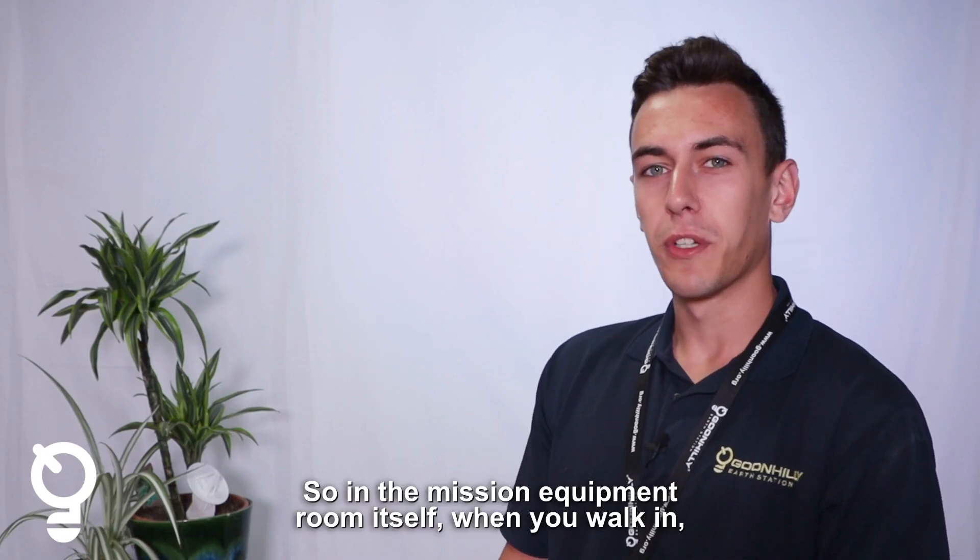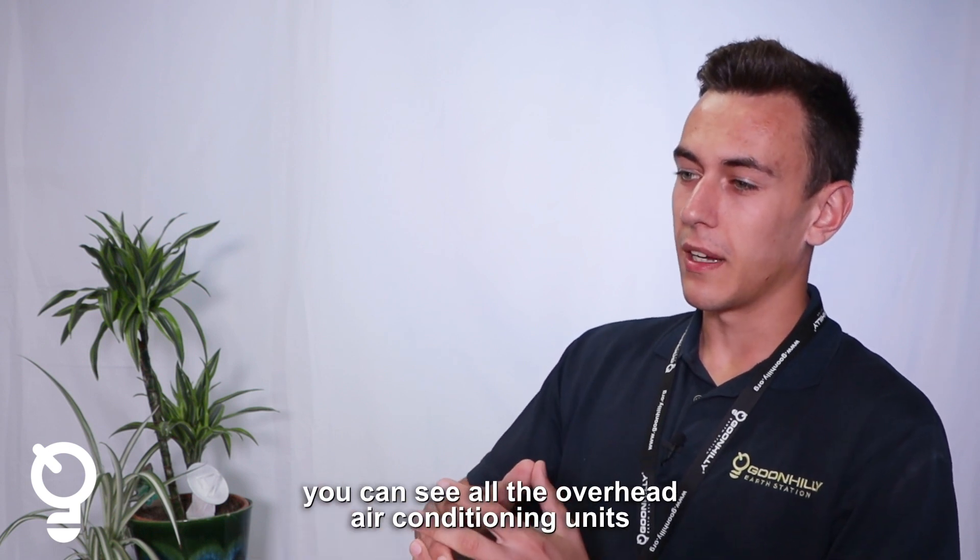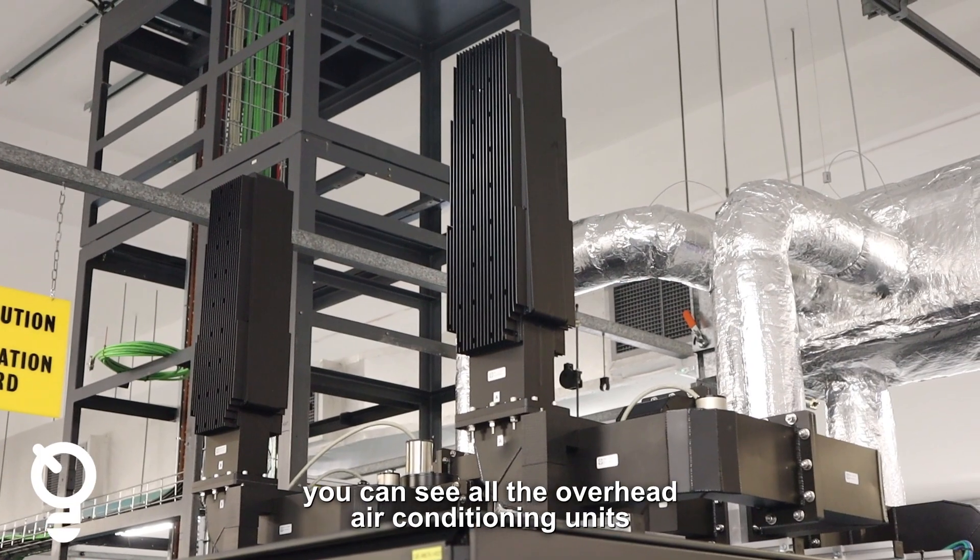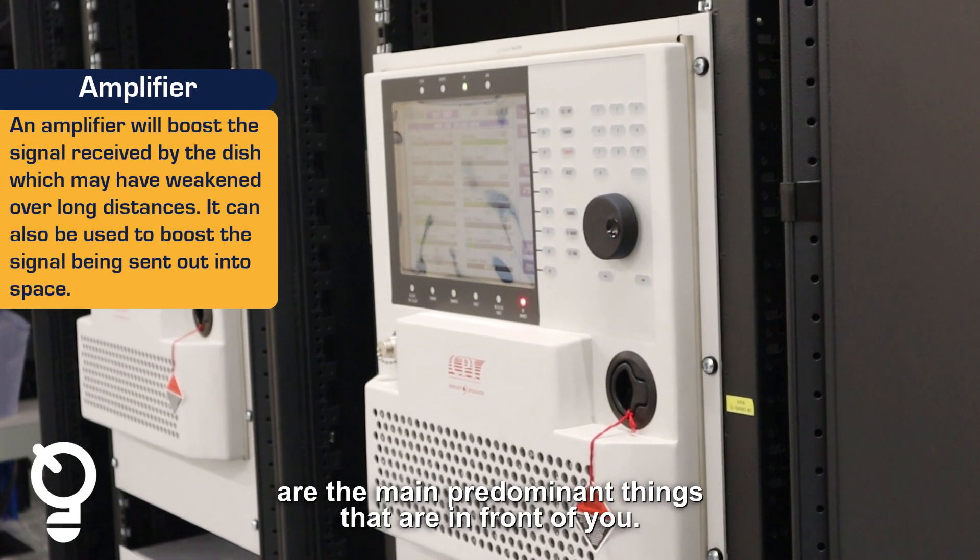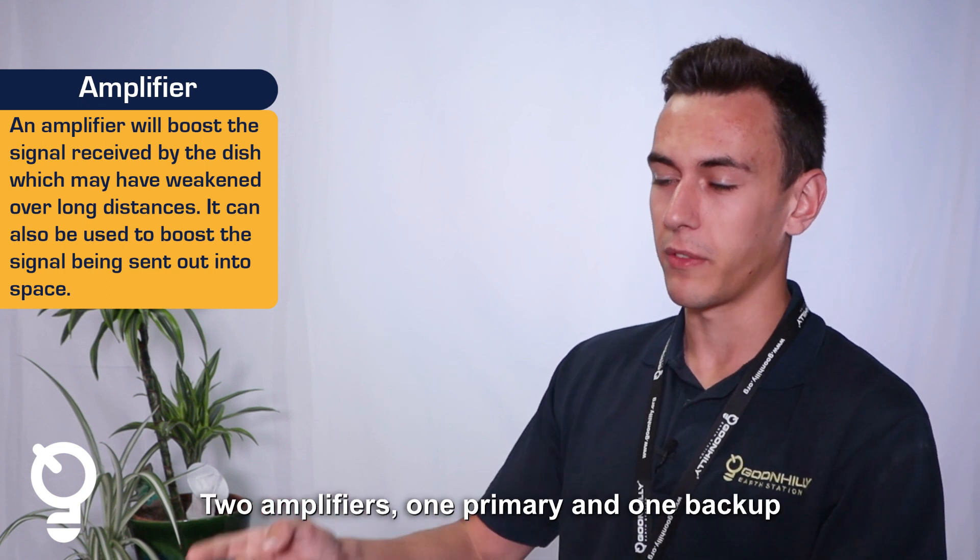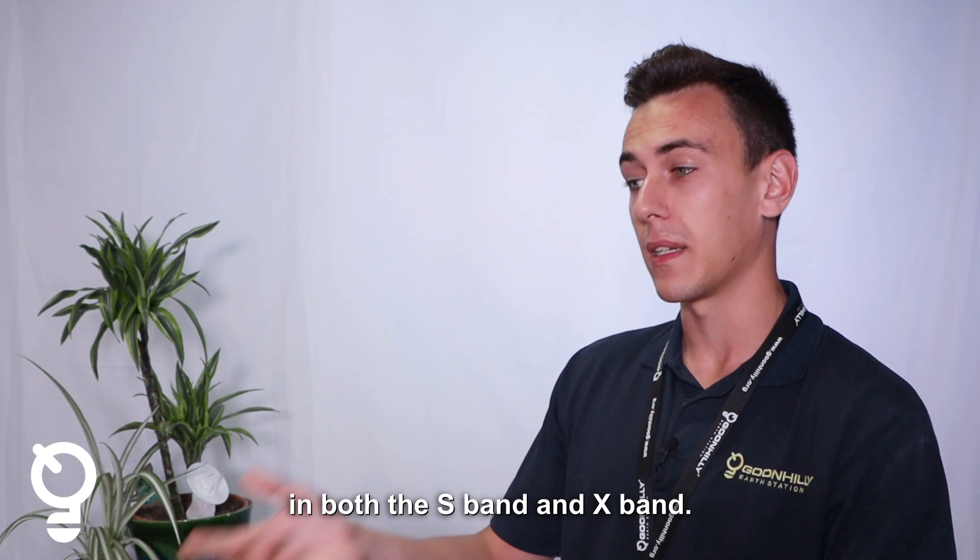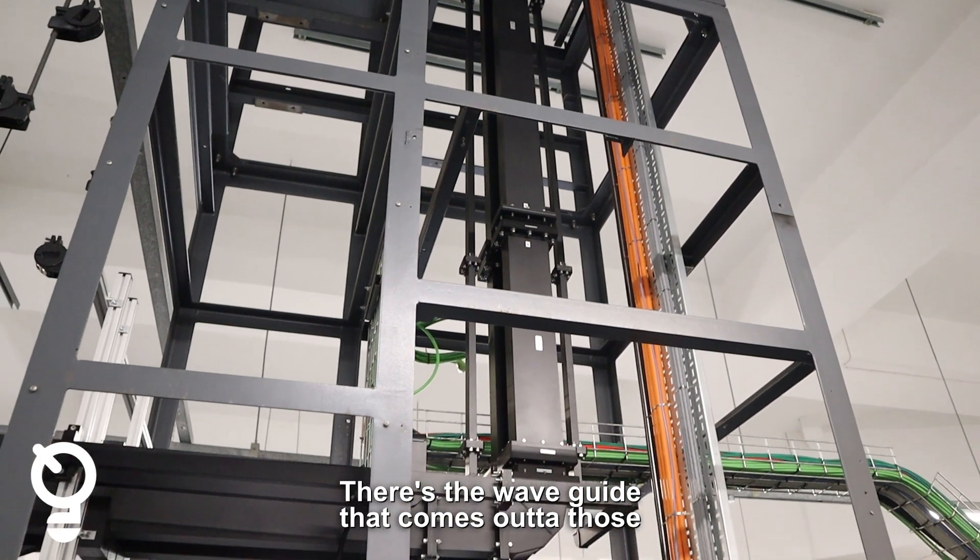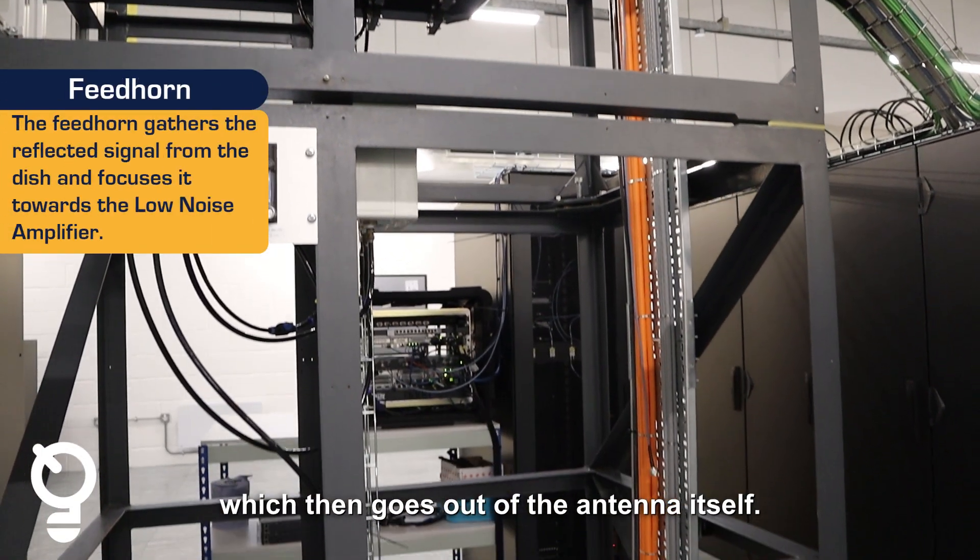In the mission equipment room itself, when you walk in, you can see all the overhead air conditioning units primarily, and then the amplifiers are the main predominant things in front of you. You can see two amplifiers, one primary and one backup in both the S band and X band. There's the waveguide that comes out of those that then go up to the feed horn, which then goes out of the antenna itself.